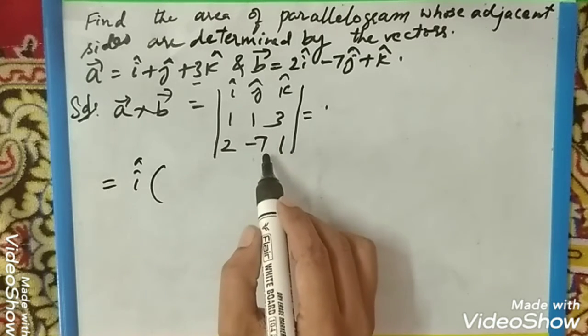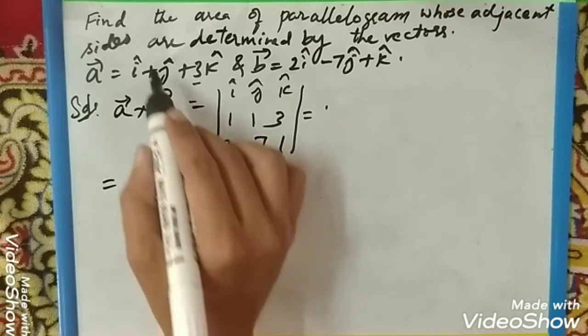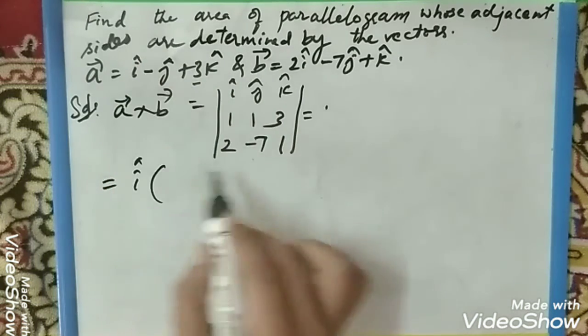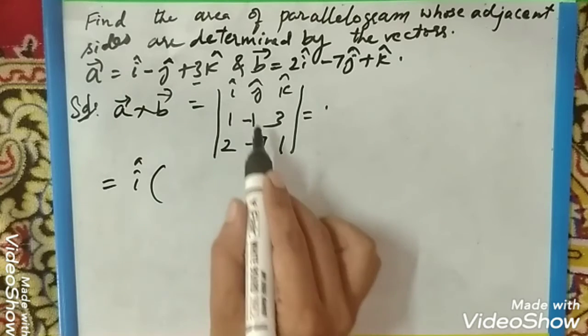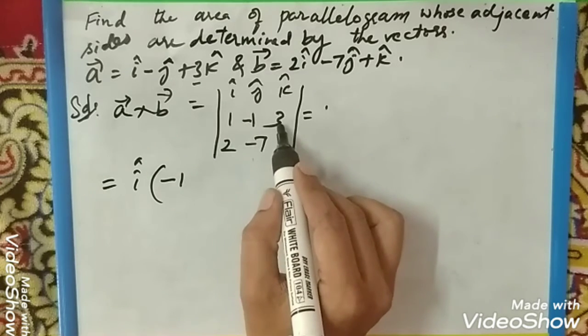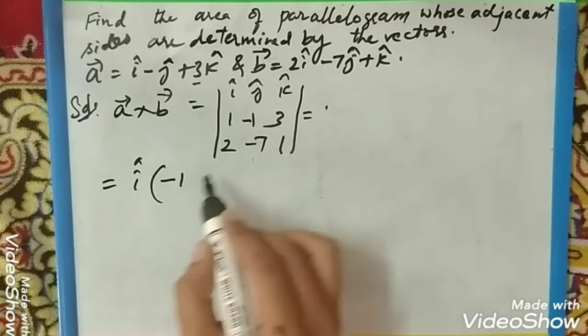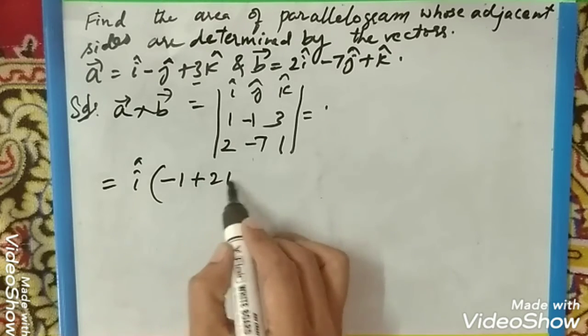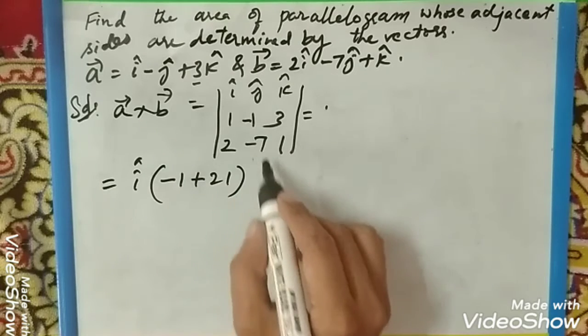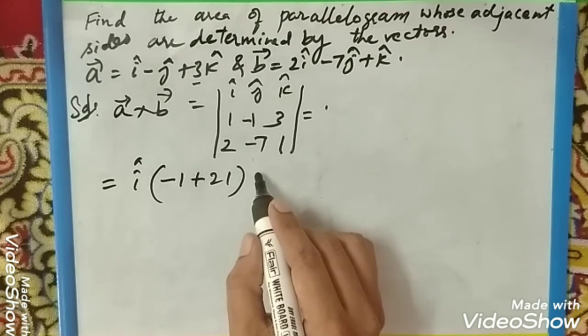So 1, 1 is 1, sorry this is -1, so -1, 1, 1 is -1, and -7 into 3 is -21. The operation is plus, so -1 plus -21 is -22. Now j.